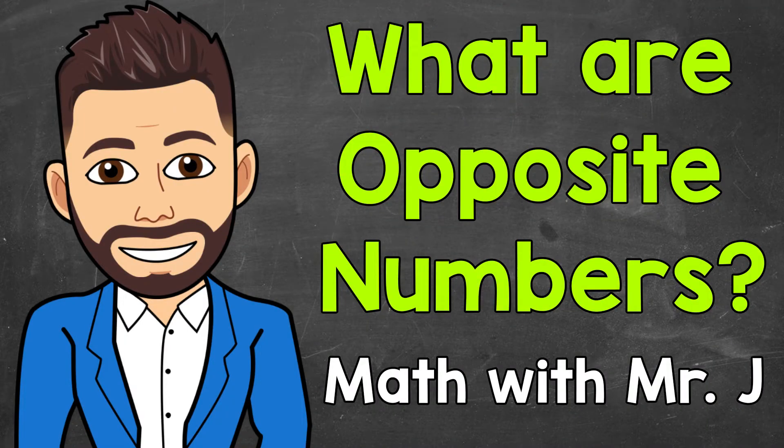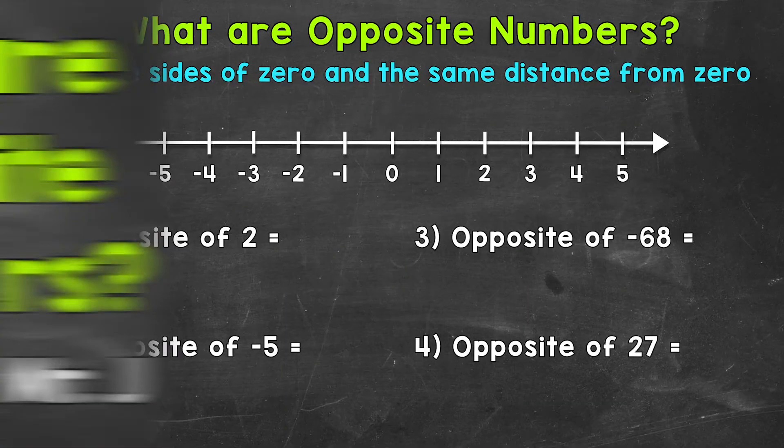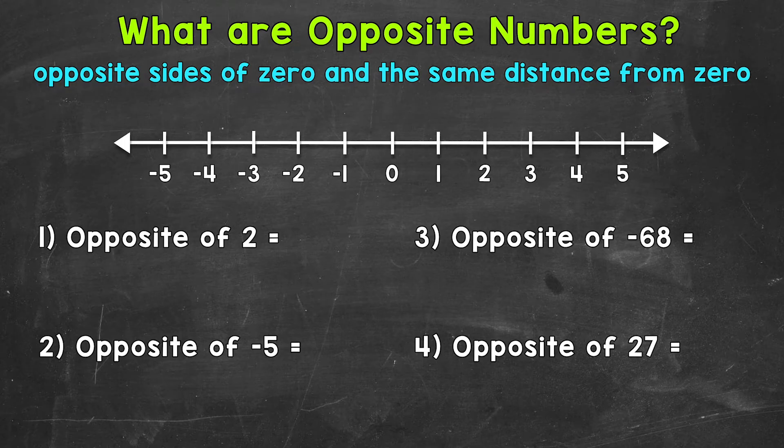Welcome to Math with Mr. J. In this video, I'm going to cover what are opposite numbers. Now, opposite numbers are on the opposite sides of zero, and they are the same distance from zero, so they have the same absolute value.